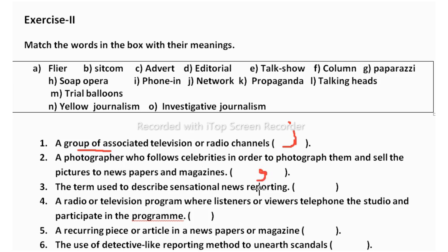The term used to describe sensational news reporting — we call it yellow journalism. This type of sensational news is published in newspapers to attract readers and increase circulation. That is why it is called yellow journalism.